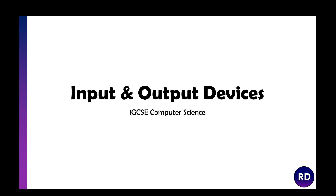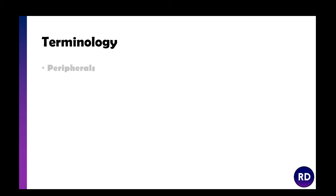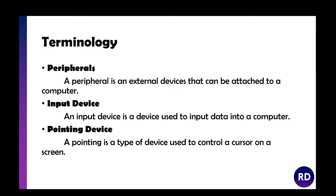In this video we're going to look at input and output devices for computer science. I'm not going to explain every single input and output device you need to know for the exam because there's quite a lot. I recommend you watch this video, then look at the two lists I'll give you, and do your own research to get a basic understanding of how each of them work. You don't need to write an essay — you just need to understand how they basically work.